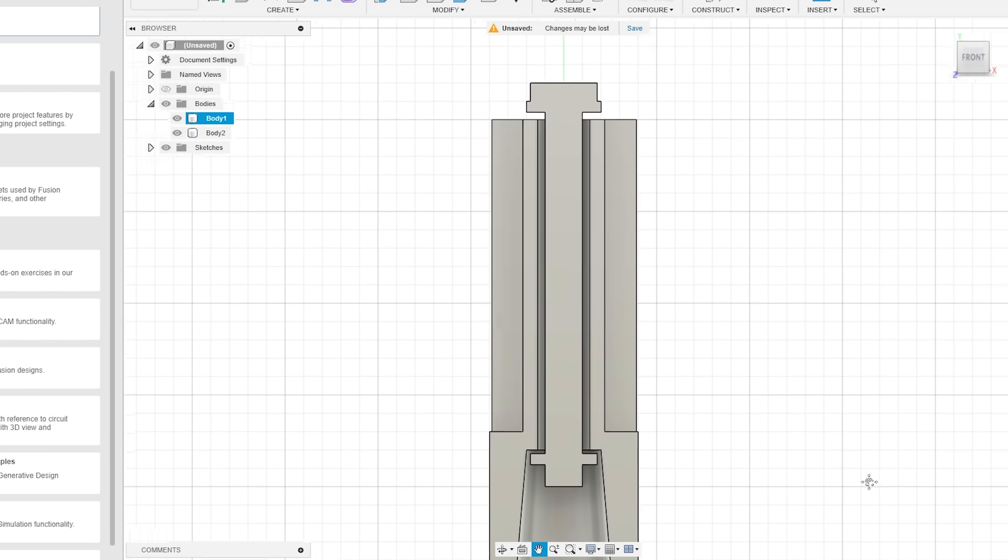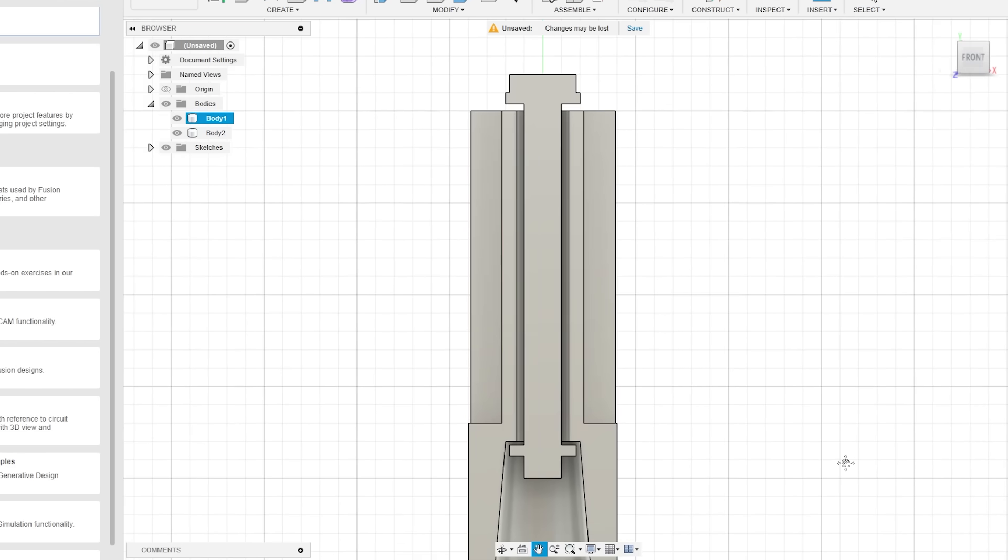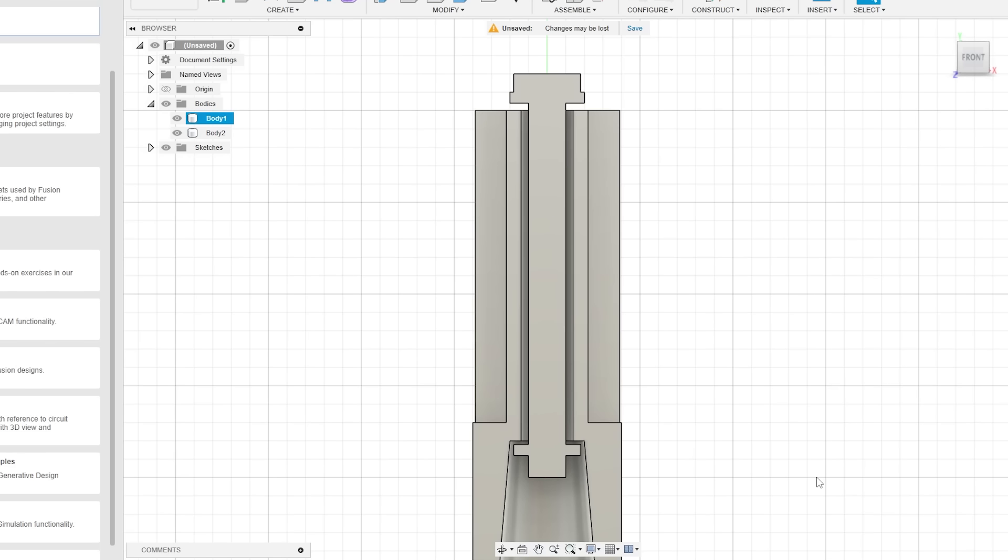What this means is that when we undo the drawbar, instead of the drawbar moving upwards, it should force the tooling or the collet downwards, which should release the tool. This negates the need to hit it with a hammer and is a big step in being able to build a proper power drawbar.